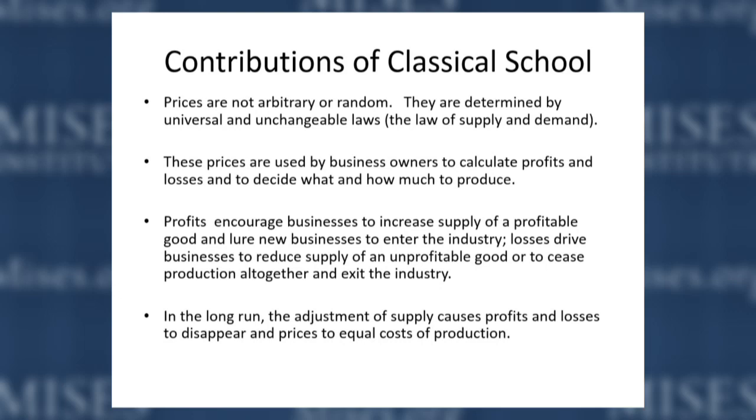The classical economists also showed that prices are used by business decision makers to allocate resources and calculate profits and losses. For example, if the price of oil and gasoline goes up, it becomes more costly to drive large cars, demand for large cars falls, and people move to smaller cars. You'd have losses for producers of large cars and high profits for producers of hybrids, smaller cars, and electric cars — a shift in real-world production driven by people's choices and values.